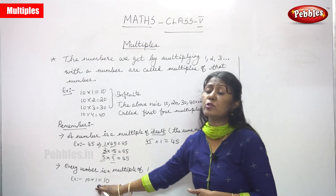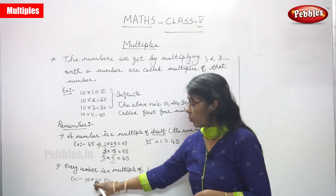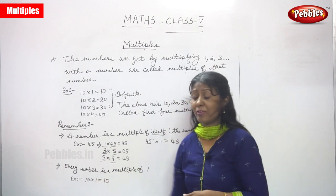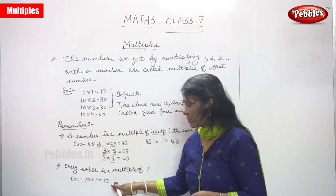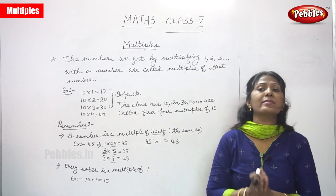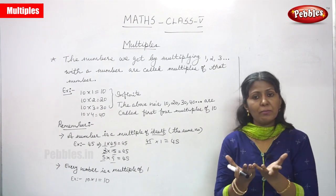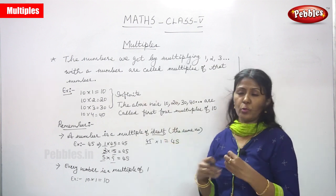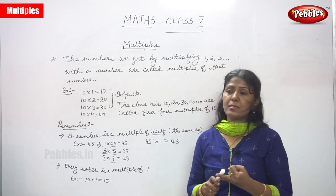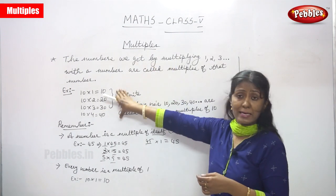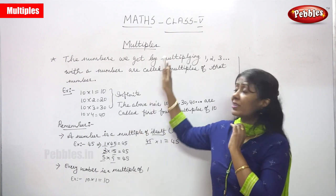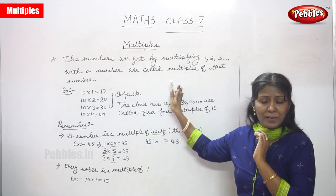Second point: every number is a multiple of 1. So 10 into 1 gives you 10, meaning 1 is a multiple of 10. These two points are very important — they are the major rules of multiples. Remember the definition, the example, and these two points to remember.